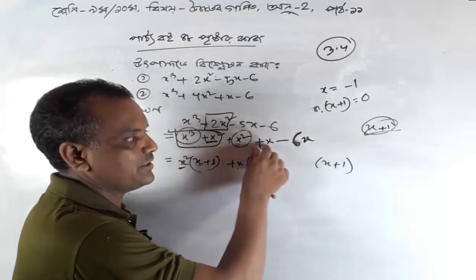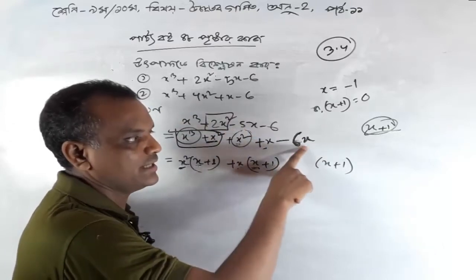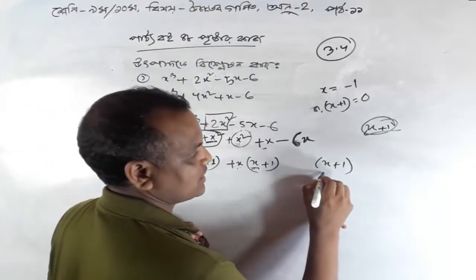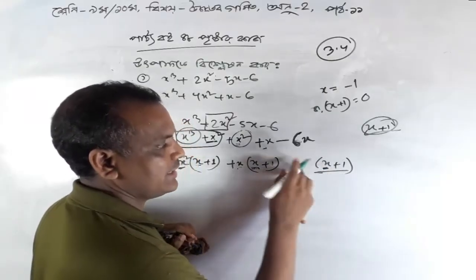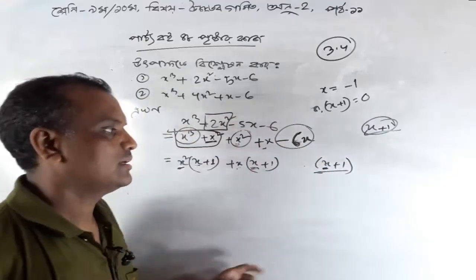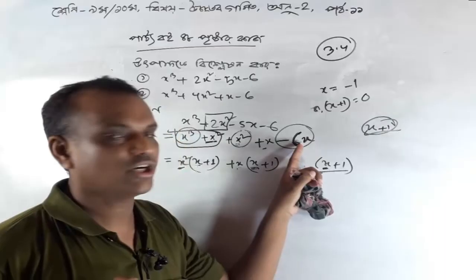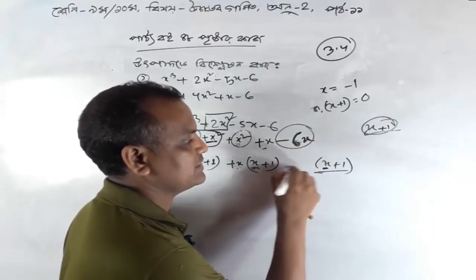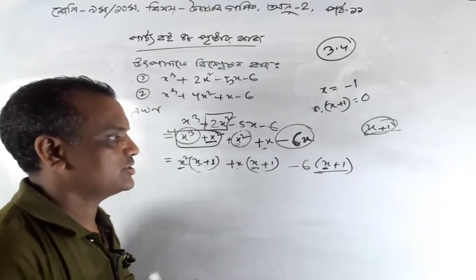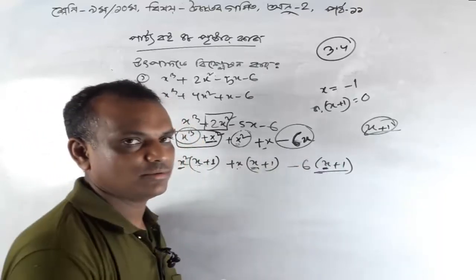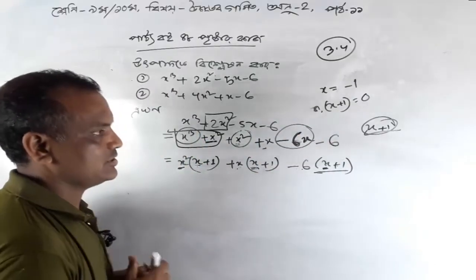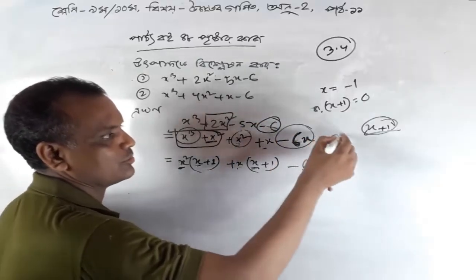Now we have to write eta and eta is equal to eta — plus x and minus x, this is minus x. Now we have to write eta and x is equal to eta. We write minus 6. Minus 6 and x is equal to minus 6. Minus 6 and 1 is equal to minus 6. So minus 6 and 1 is equal to minus 6. We get minus 6 — this will be equal to minus 6. So minus 6 — we have to write minus x.